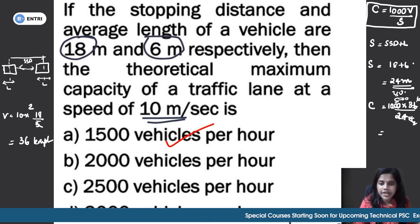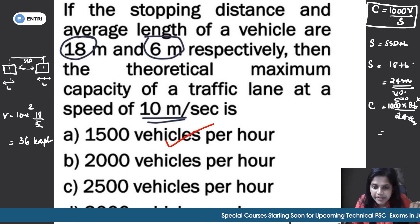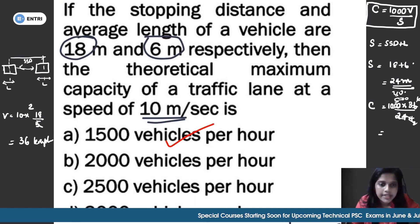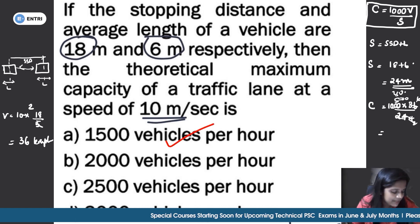1500 vehicles per hour is the maximum capacity for a traffic lane.